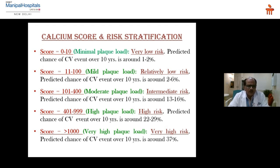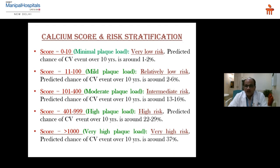Calcium score ranges and risk: 0–10 is minimal plaque load, very low risk — predicted cardiovascular risk over 10 years is 1–2%. Score 11–100 is mild plaque load, relatively low risk — 2–6% over 10 years. Score 101–400 is moderate plaque load, intermediate risk — 13–16% over 10 years. Score 401–999 is high plaque load, high risk — 20–29% over 10 years. Score above 1000 is very high plaque load, very high risk — 37% and above over 10 years.